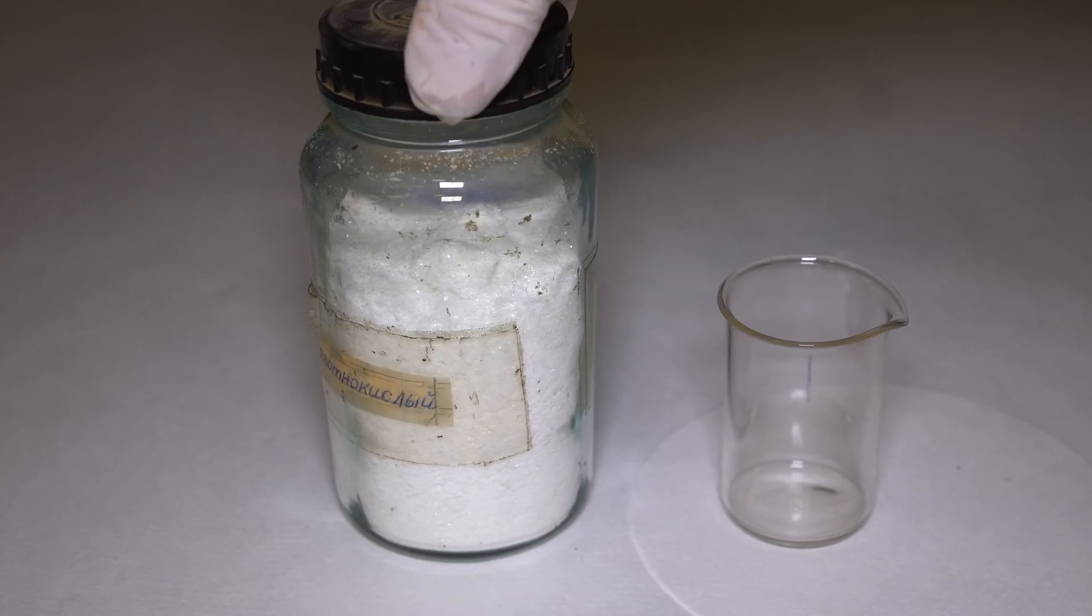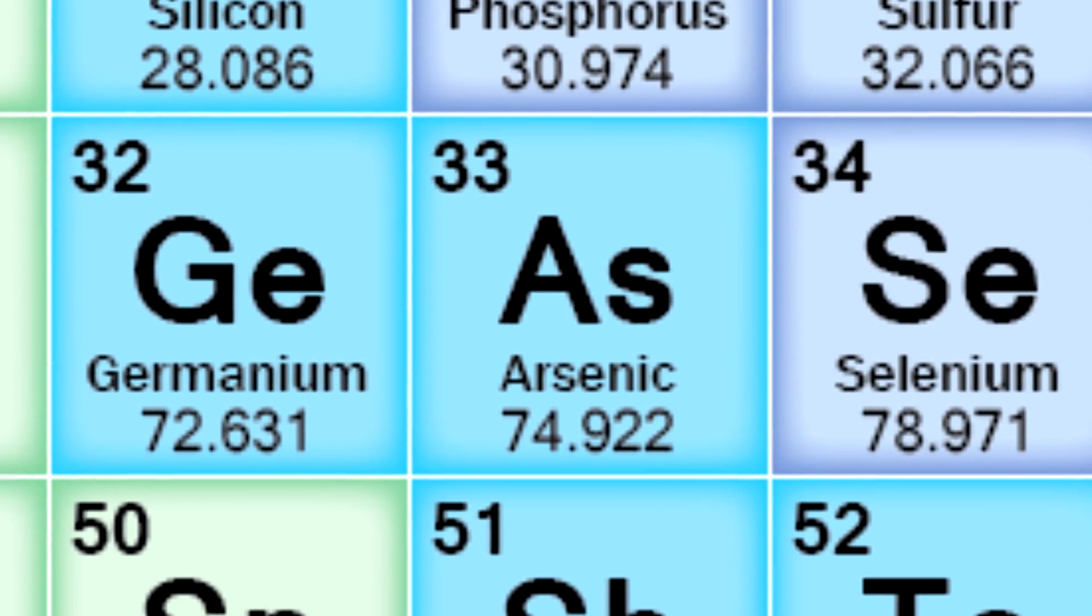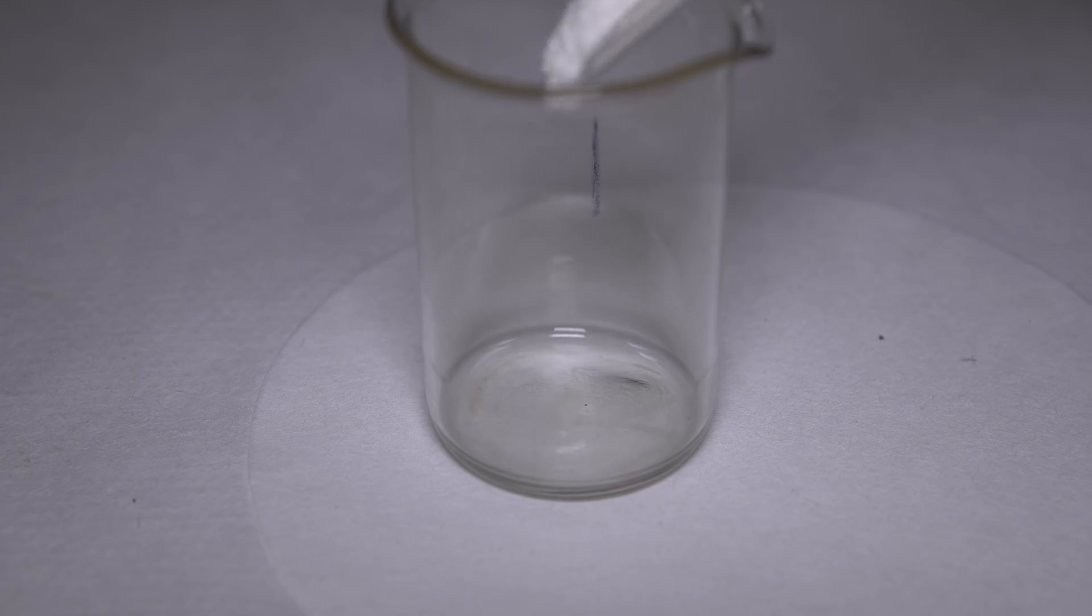By the way, thallium compounds are the most toxic among all the metals, because toxic arsenic for instance belongs to the metalloids class. But we will speak about toxicity a bit later.